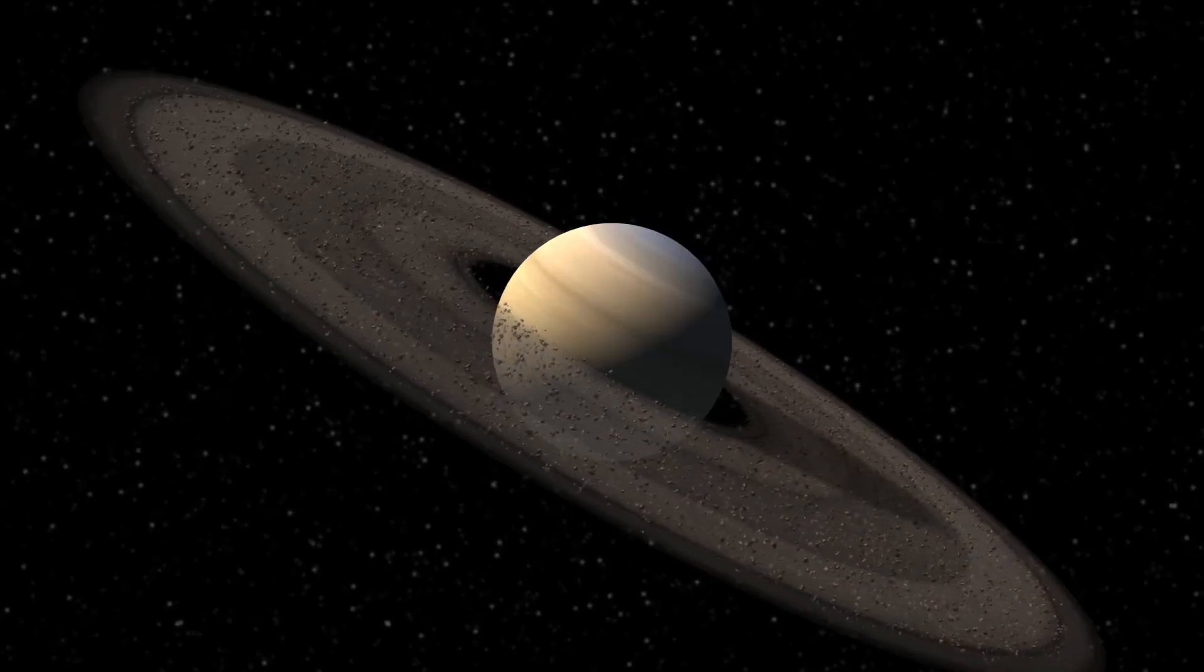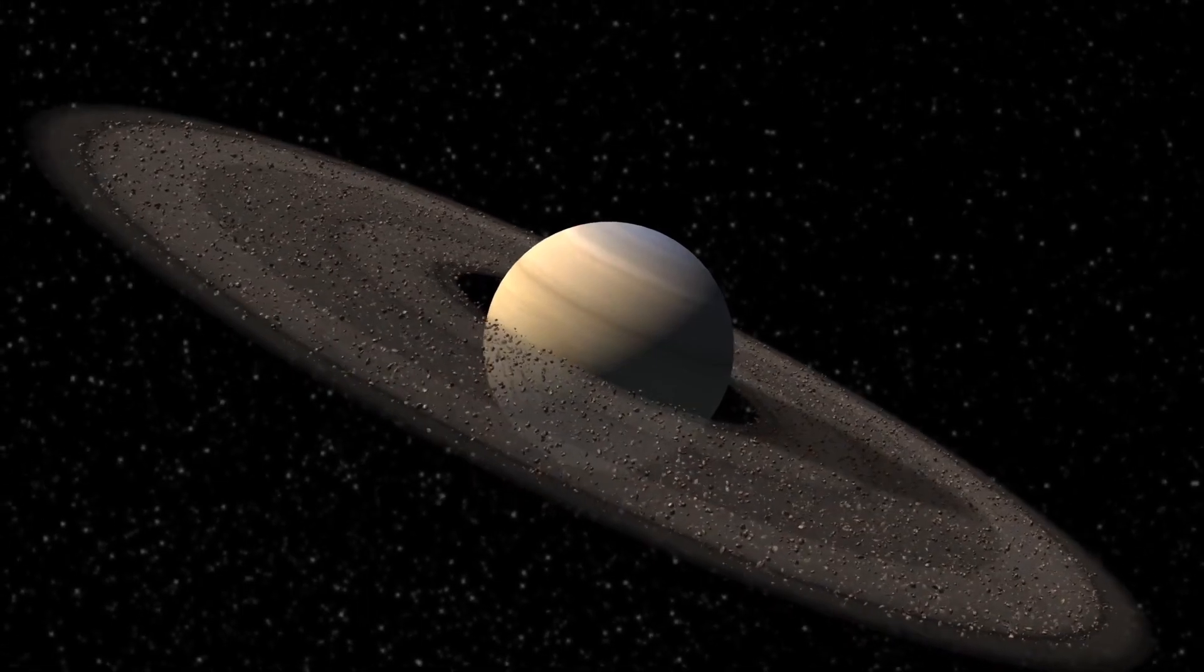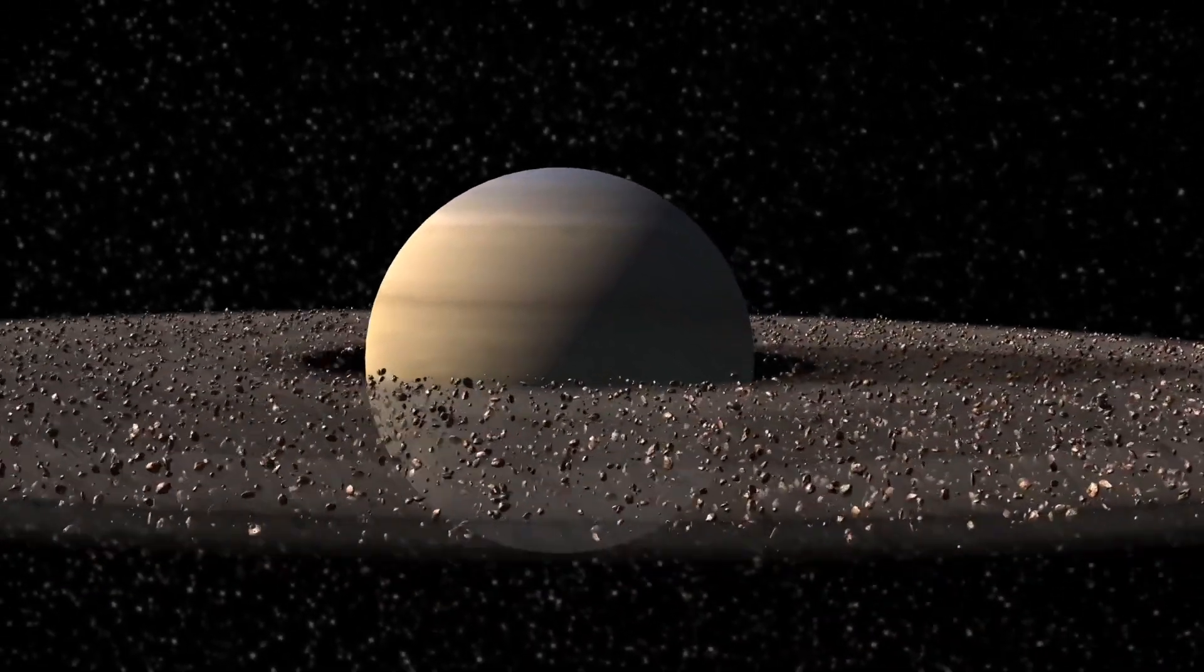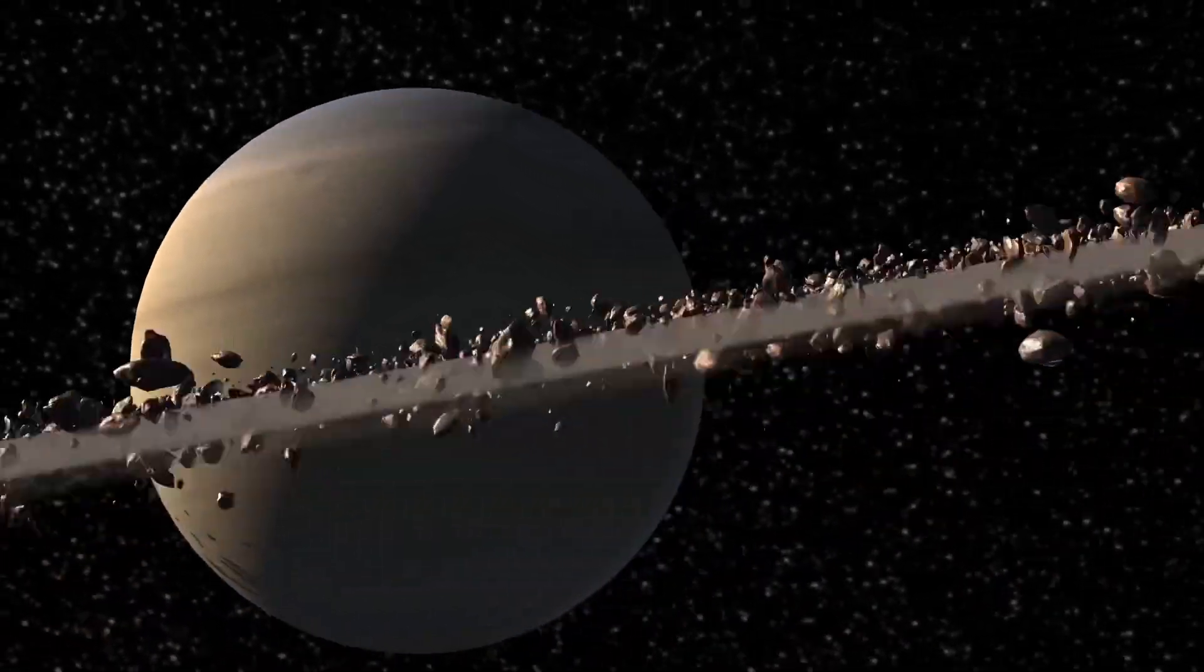Saturn is known for its beautiful rings, but has a relatively fast rotation. It takes 10.7 Earth hours for Saturn to complete one rotation.